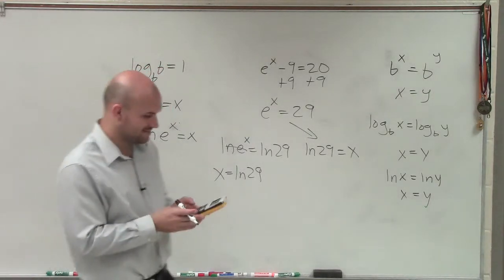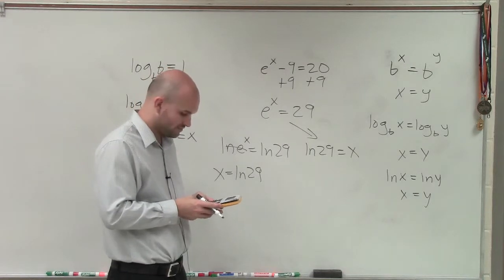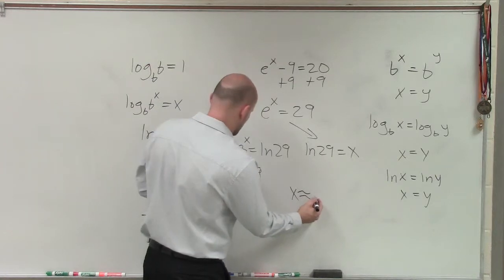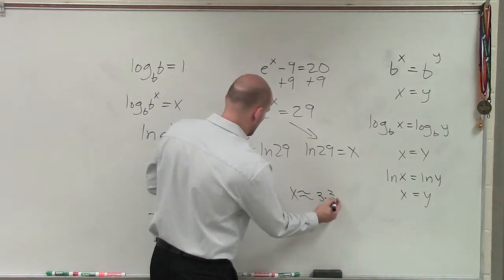Then, to find my value, I'm just going to have to take ln of 29. In this case, I'm going to have x equals approximately 3.37.